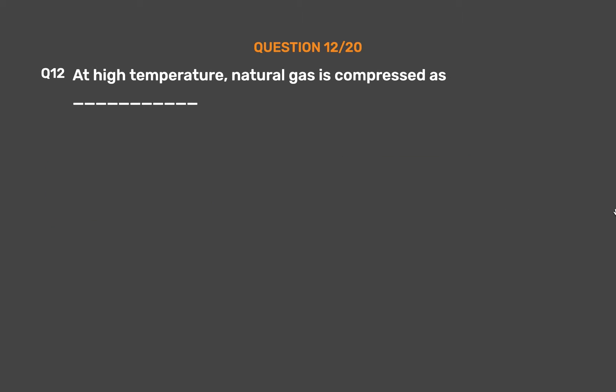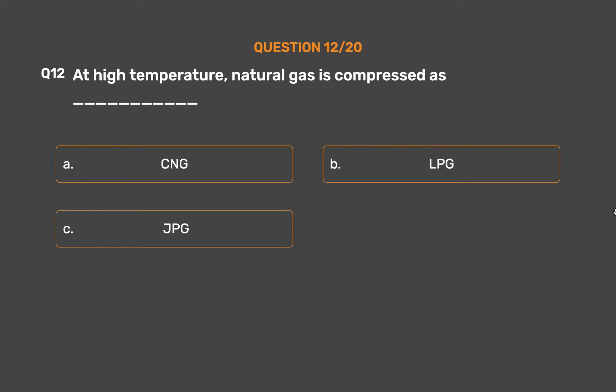Question number 12: At high temperature, natural gas is compressed as _____. Option A: SNG. Option B: LPG. Option C: JPG. Option D: None of these.